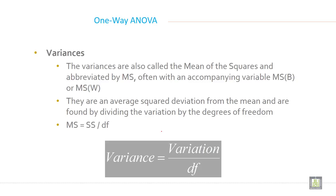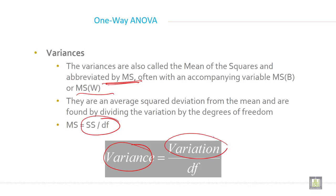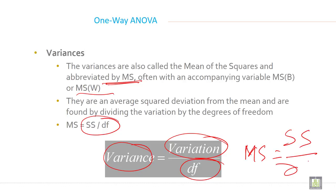Now, variance. The variances are also called the mean of the square, abbreviated as MS — mean of the square — or MS with an accompanying variable, MSB or MSW. They are an average squared deviation from the mean and are found by dividing the variation by the degree of freedom. So MS equals SS divided by degree of freedom, or variance equals variation divided by degree of freedom.